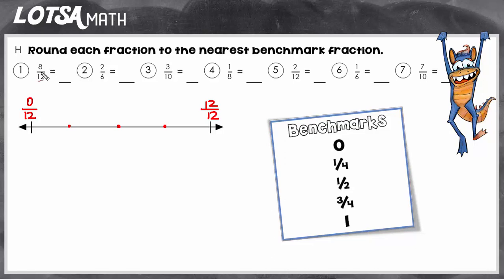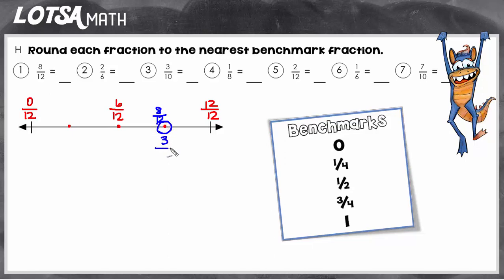Now I want to put eight-twelfths on here. I don't really know exactly where eight-twelfths is, but I know exactly half would be six-twelfths, because six is half of twelve. So now I just need to put eight-twelfths where I think it might be. If this is six-twelfths and this is twelve-twelfths, eight is going to be somewhere around here — I think it would be about here. Once I've placed my fraction, I just look at the dots where I originally put my benchmark fractions and see which one it's closest to. Eight-twelfths is closest to three-fourths.